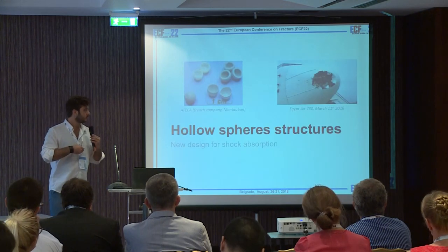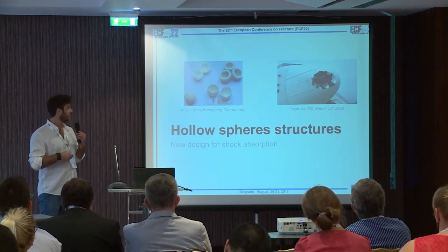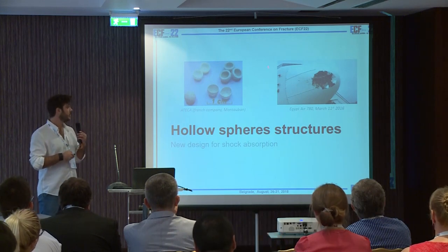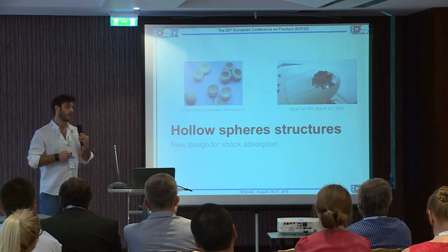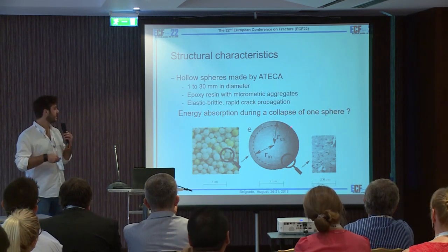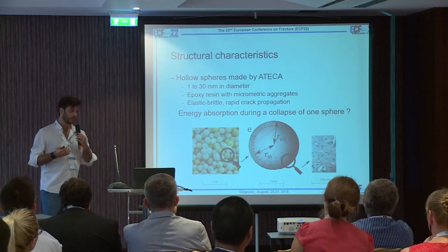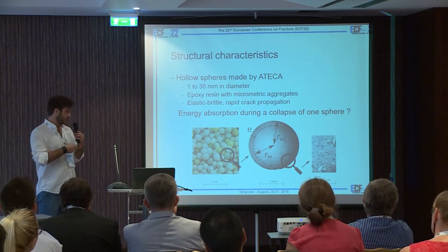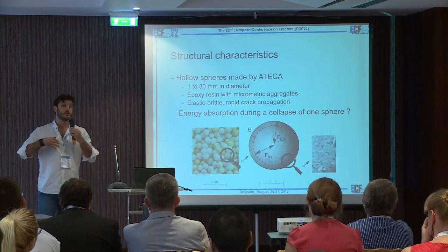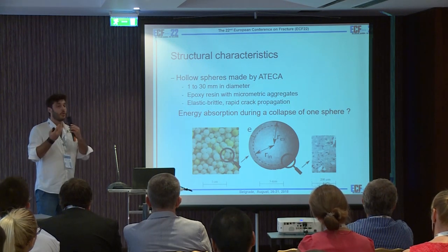Now we can go to the subject of this work, which is the hollow sphere structures. These hollow spheres are quite small, sub-centimetric, and could be used in new designs for shock absorption, for example for aeronautic applications. Very briefly, this material is made with epoxy resin with micrometric aggregates, and the behavior appears to be elastic brittle, and a rapid crack propagation is observed. The main question is, as the application is shock absorption, we need to know how much energy is absorbed during the collapse of one sphere.